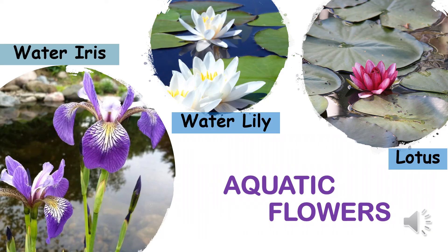You will be amazed to know that there are some flowers which grow on water as well. These are known as aquatic flowers. One of the very common aquatic flowers which you would have seen is lotus. It grows on water. Some more examples of aquatic flowers are water iris and water lily.